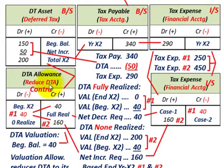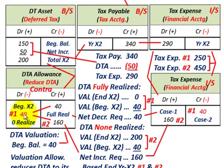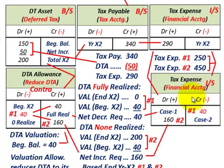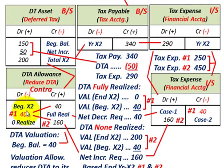Go into your valuation account and debit it for $40,000, because you're going to realize the total $200,000 in your deferred tax asset. That essentially reduces the deferred tax asset allowance account to zero. The balancing credit entry for that $40,000 reduction goes to tax expense on your income statement — you would credit your tax expense for $40,000, reducing it.